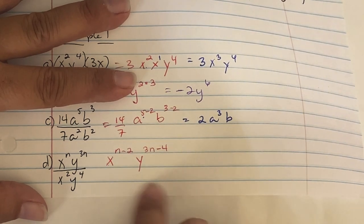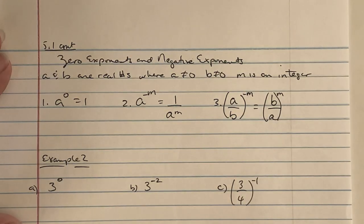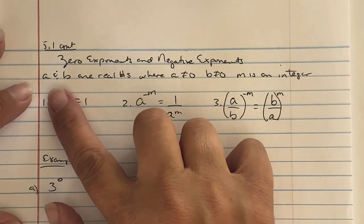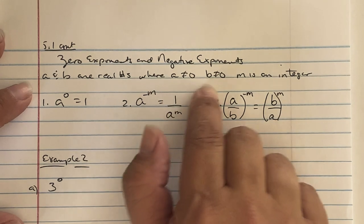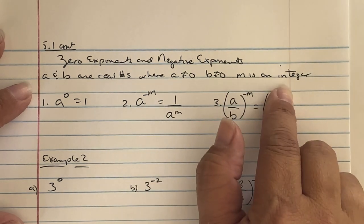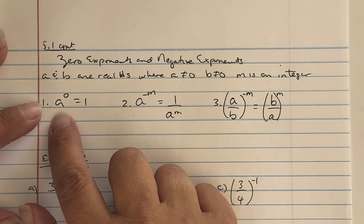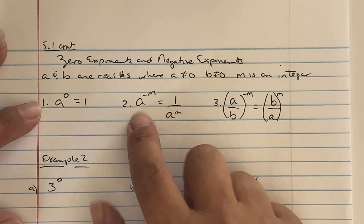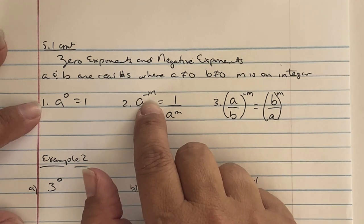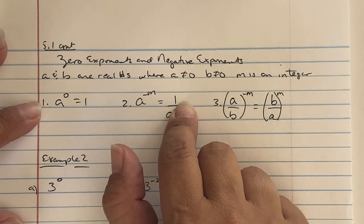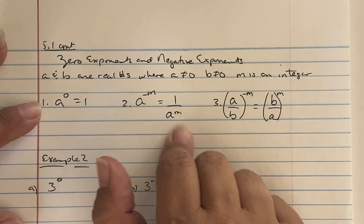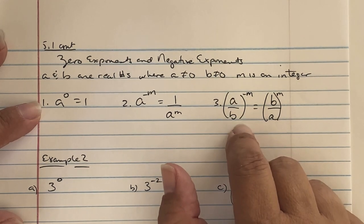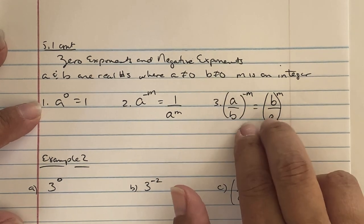Zero exponent and negative exponent rules: a and b are real numbers where a does not equal zero, b does not equal zero, and m is an integer. Anything raised to the zero power equals 1. If you see a to the negative m power, rewrite it as 1 over a to the m, making the exponent positive — negative exponents are not allowed in a final answer.